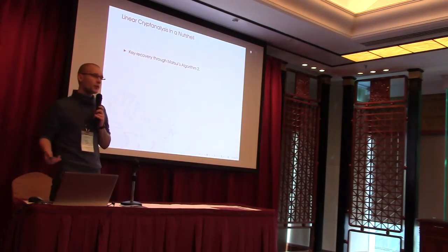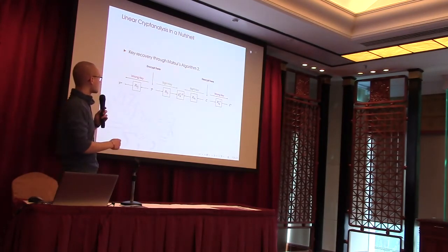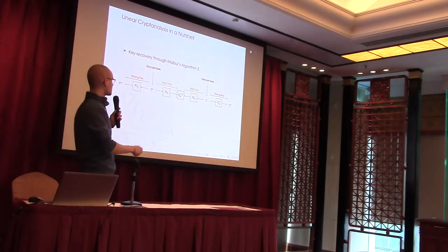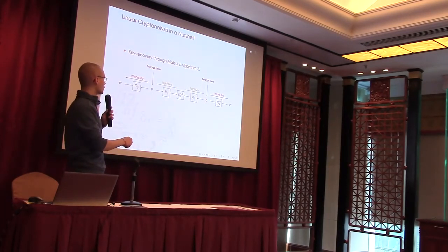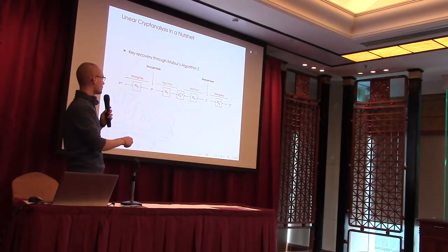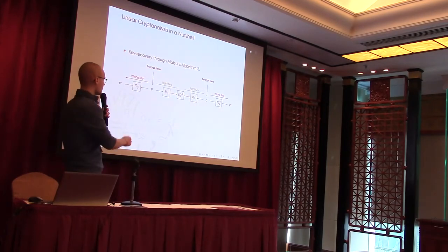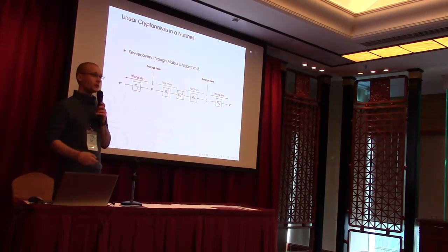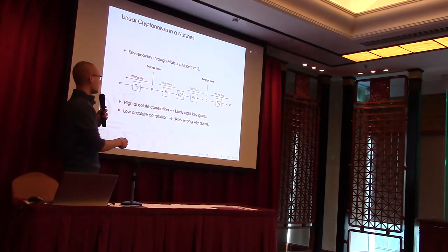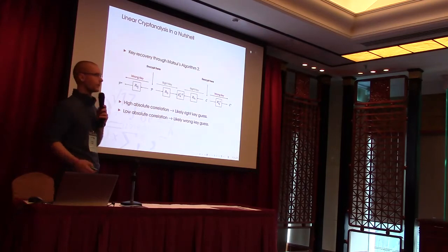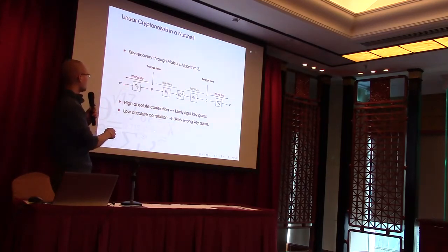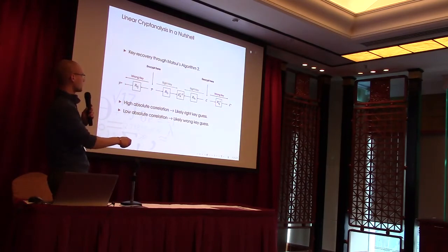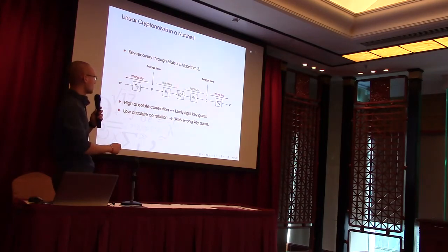The key recovery part of linear cryptanalysis works as follows using Matsui's algorithm 2. We obtain some plaintext-ciphertext pairs, and then we have some good linear approximation over, say, R-2 rounds. Then we guess some outer-round key bits, encrypt here, decrypt here, and check the correlation. The idea is if for a right key guess, we get a high correlation indicated by our good approximation. And if we guess wrong, then we get some different mapping from P star to C star, which hopefully has a low correlation.